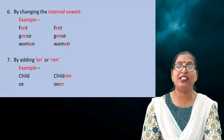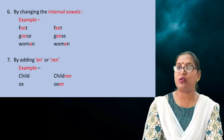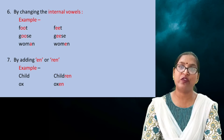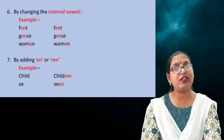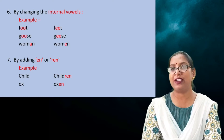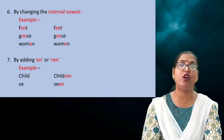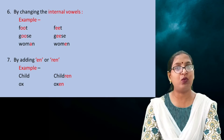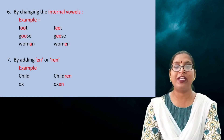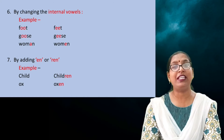The next rule: by changing the internal vowels. In some words, we do not add S or ES to change into plural form; instead we change the internal vowels. For example, 'foot' — F-O-O-T. The internal vowels O-O are changed into double E to get the plural form: 'feet'. 'Goose' — G-O-O-S-E — becomes 'geese'. 'Woman' becomes 'women' — W-O-M-E-N.